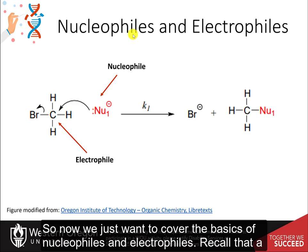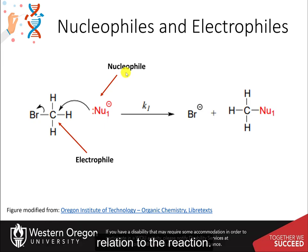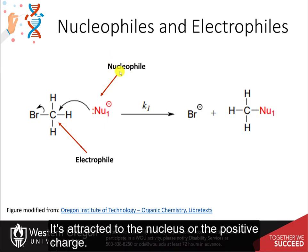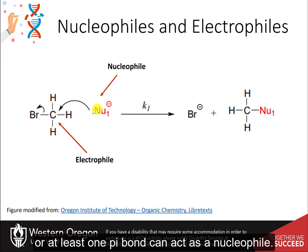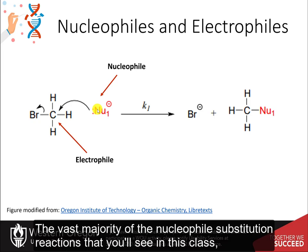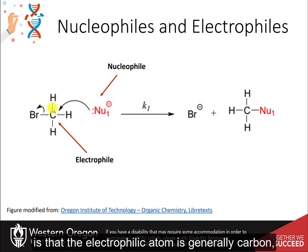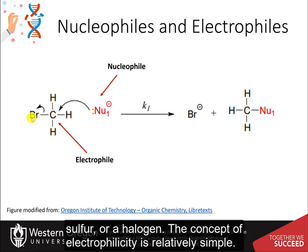A nucleophile is a chemical species that donates an electron pair to form a chemical bond, and it's attracted to the nucleus or positive charge. All molecules or ions with a free pair of electrons, or at least one pi bond, can act as a nucleophile. Because nucleophiles donate electrons, they are by definition Lewis bases. In nucleophilic substitution reactions, the electrophilic atom is generally carbon, usually bonded to an electronegative atom such as oxygen, nitrogen, sulfur, or a halogen.